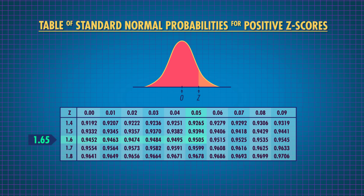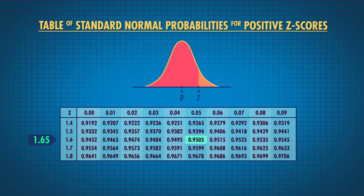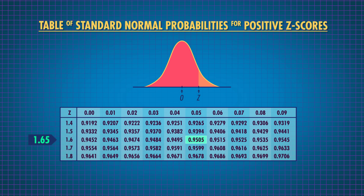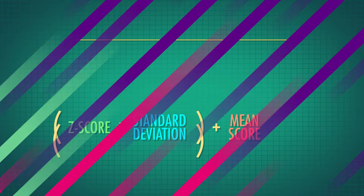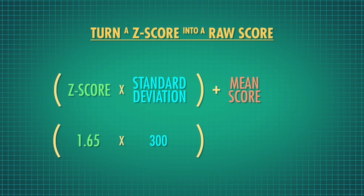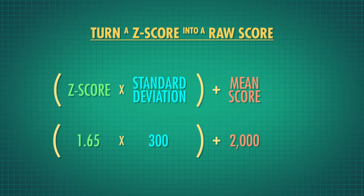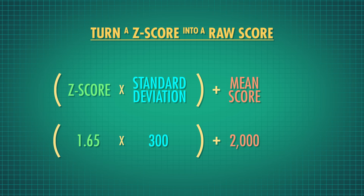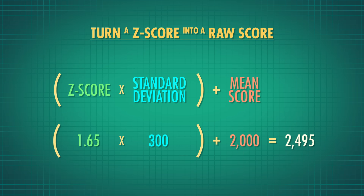In fact, a z-score of 1.65 corresponds to the 95th percentile of any z-score distribution. But we want to turn that back into a Call of Civic Duty score, so that you know how high you have to score in order to qualify for the gaming convention. We know the process to turn a raw score into a z-score, so to go the other direction, we just reverse it. First, we multiply the z-score by the standard deviation, 300, to get 495. Then we add the mean score, 2000, to get the final score you gotta beat: 2495.